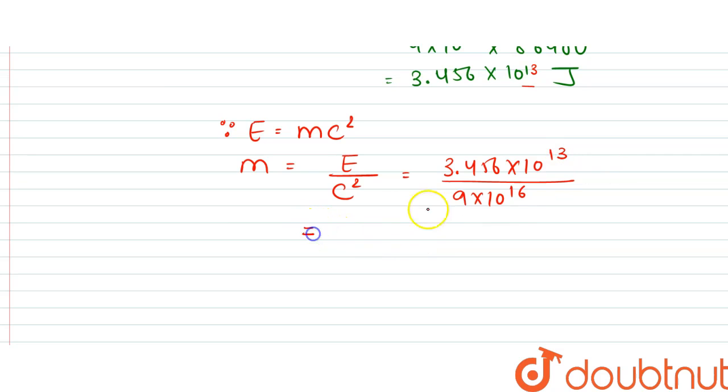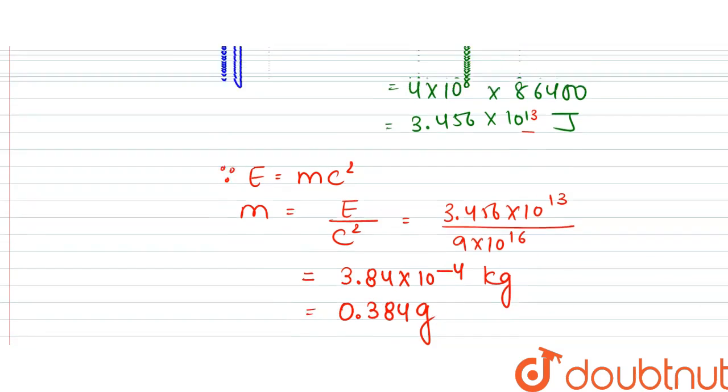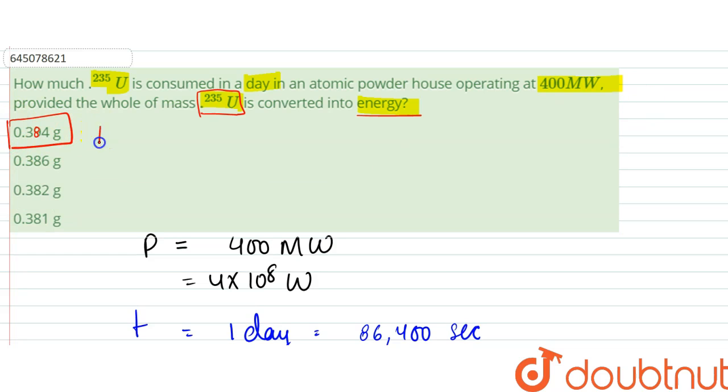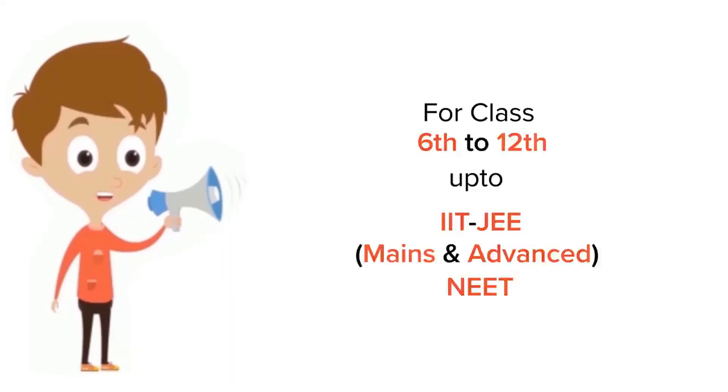Right, so this would be equal to 3.84 into 10 to power minus 4 kg. We can simply write that it is 0.384 grams. So our answer would be 0.384 grams, that is option A.